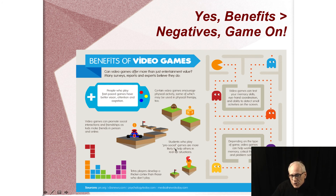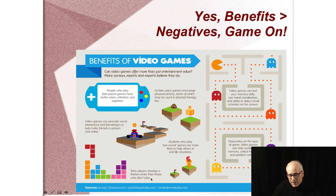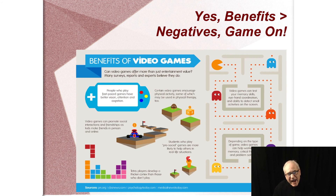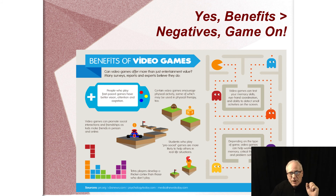Pro-social games — where you're actually helping someone in a game or learning game — help people help others in real-life situations. We also have evidence from Tetris players, role-playing game players, and three-dimensional video game players that your cortex gets thicker. Areas like the entorhinal cortex and the hippocampus — the learning and memory circuit areas — actually increase in size. Gaming produces morphologic and functional changes in the physiology of the brain.